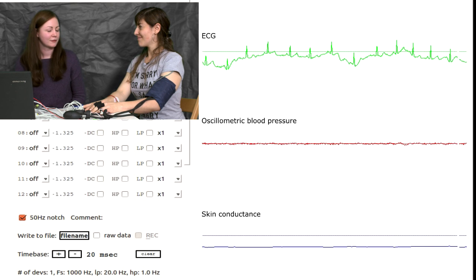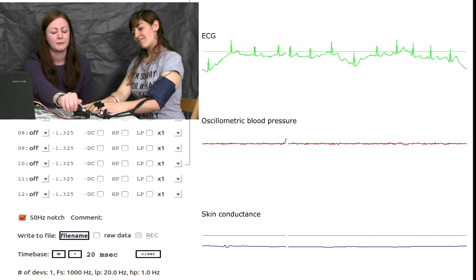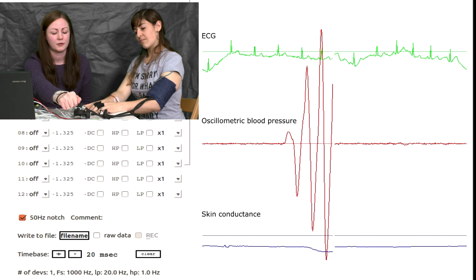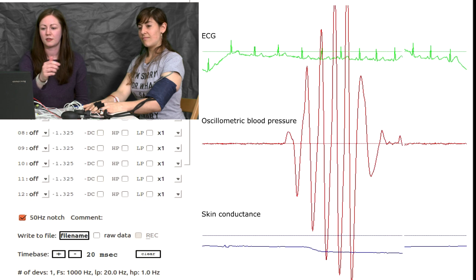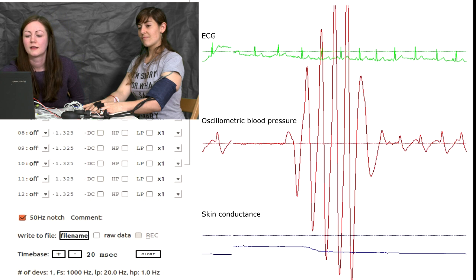And the next thing is to inflate the blood pressure cuff. So we're going to put that up to an intermediate level. So that's 70 for you. So you should see that appearing on the screen. That looks good.